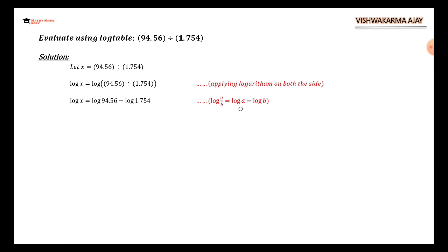There is a property of log: log a upon b can be written as log a minus log b. So taking log inside will give me log a minus log b. Now again, I have to write 94.56 in terms of 9.456 since I need only one digit before decimal. So log x equals log of 9.456 times 10 raised to 1 minus log of 1.754. Now again we will use the property of log a into b in this part, so log will go inside.